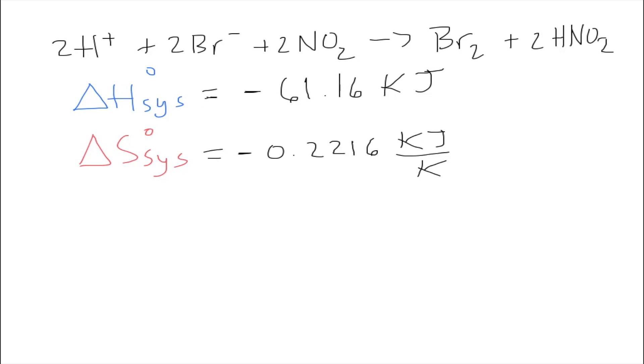We're going to divide the delta H over the delta S: negative 61.16 kilojoules over negative 0.2216 kilojoules per kelvin, and that's going to give us a value in kelvin, and that is 276 kelvin. That is our result. That temperature is going to tell you the difference between if the reaction is spontaneous or non-spontaneous.